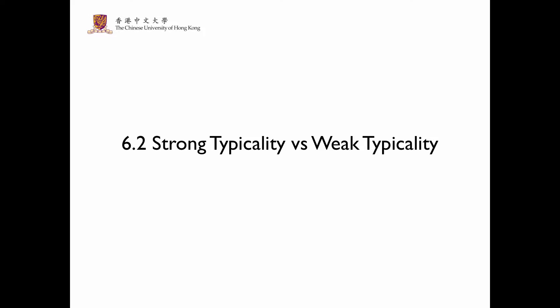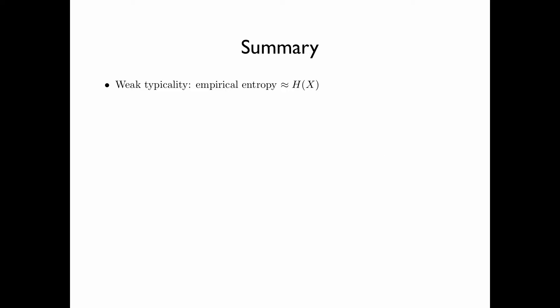In section 6.2, we compare the properties of strong typicality and weak typicality. First, we give a quick summary. Weak typicality requires that the empirical entropy is close to the true entropy. Strong typicality requires that the empirical distribution is close to the true distribution.